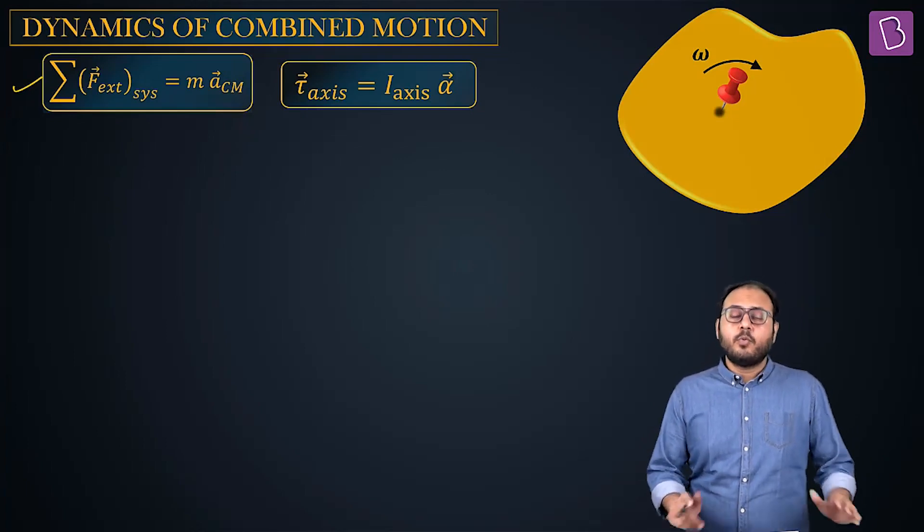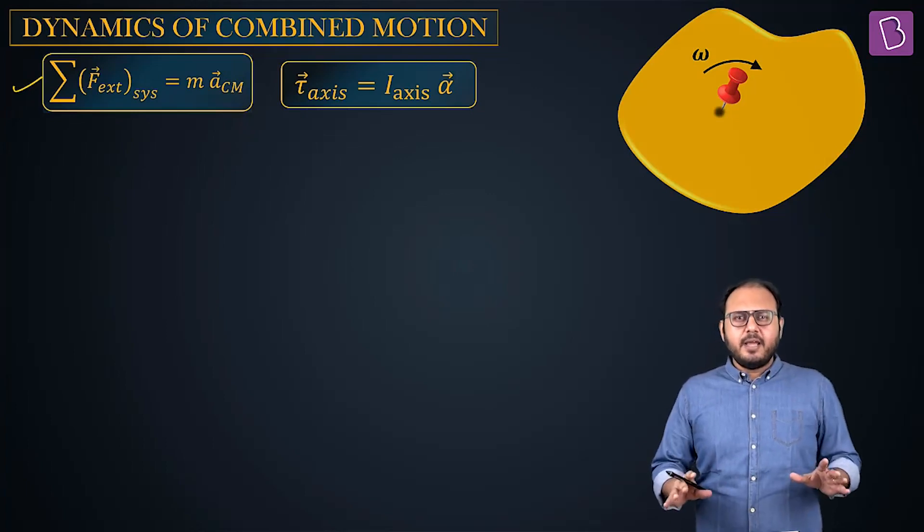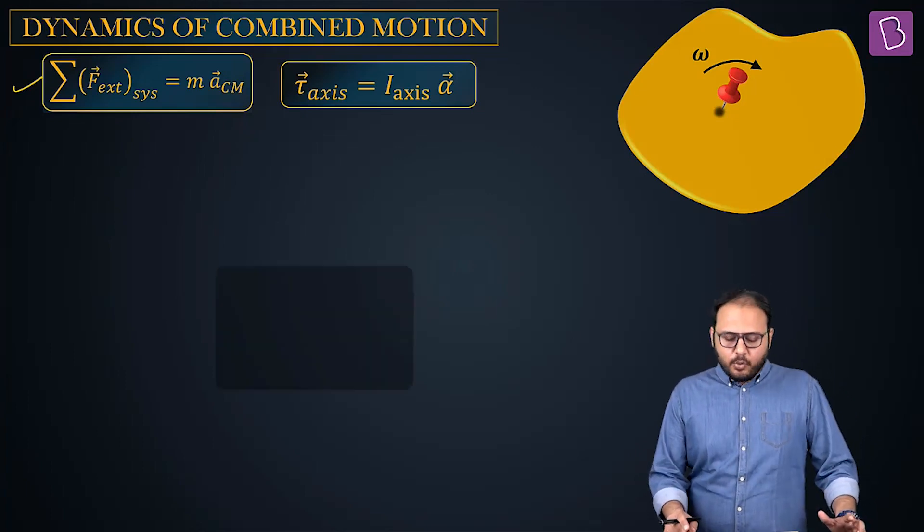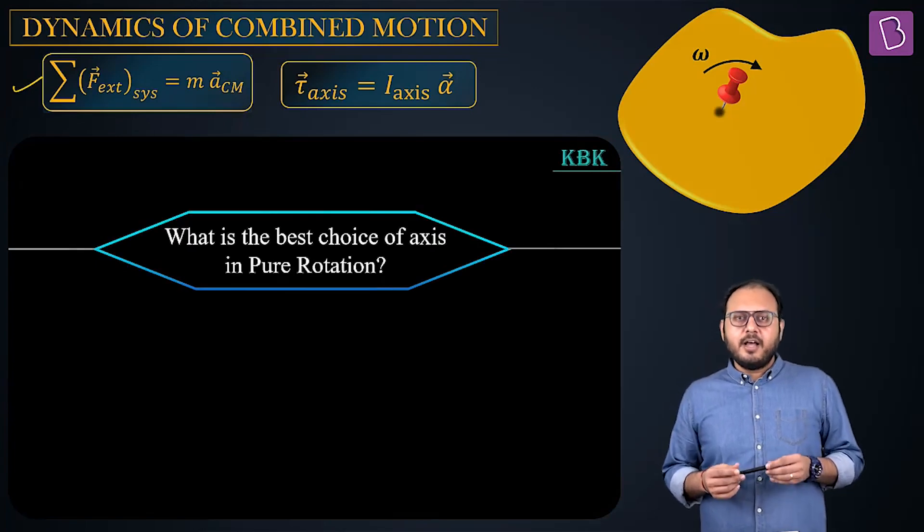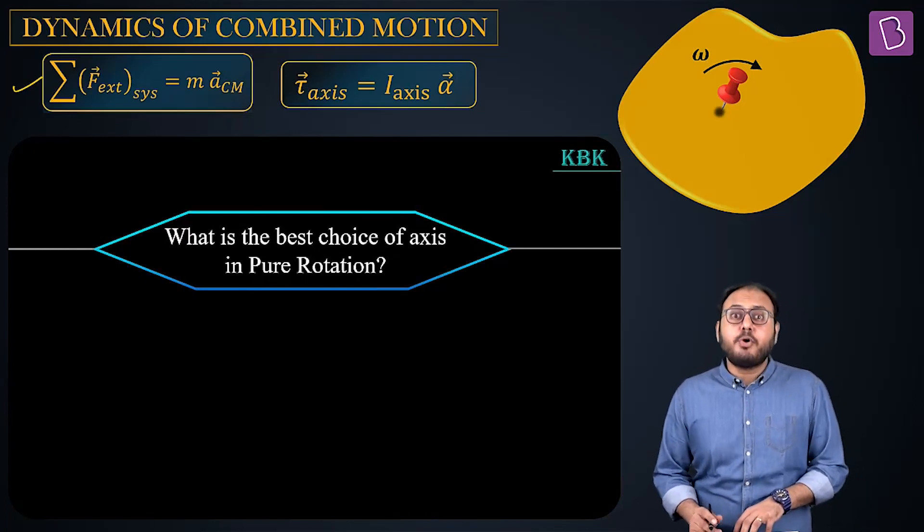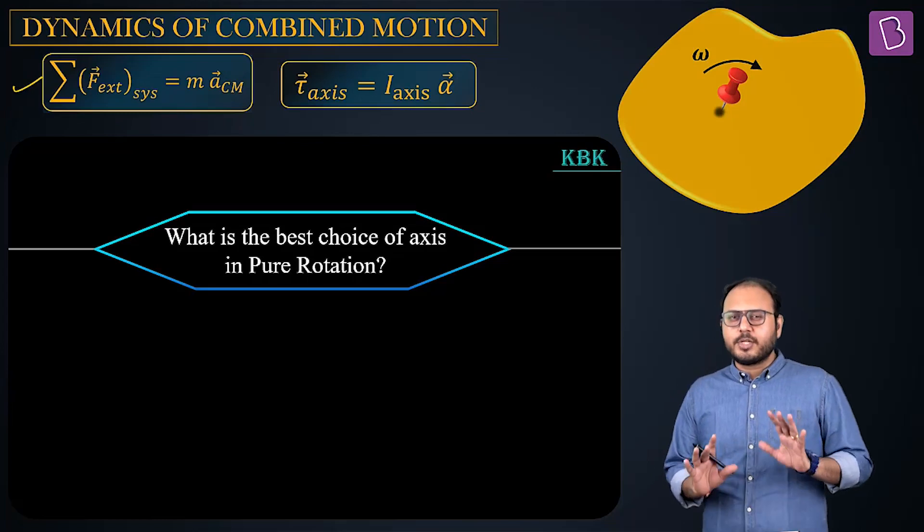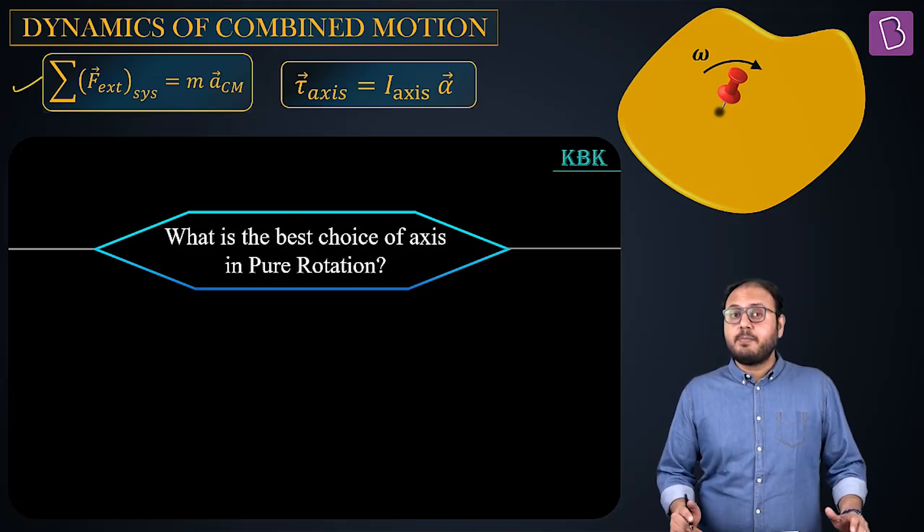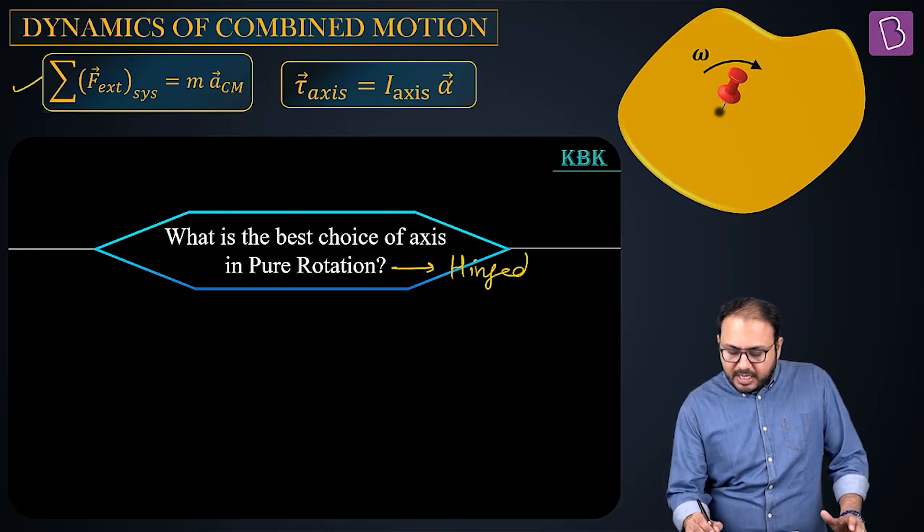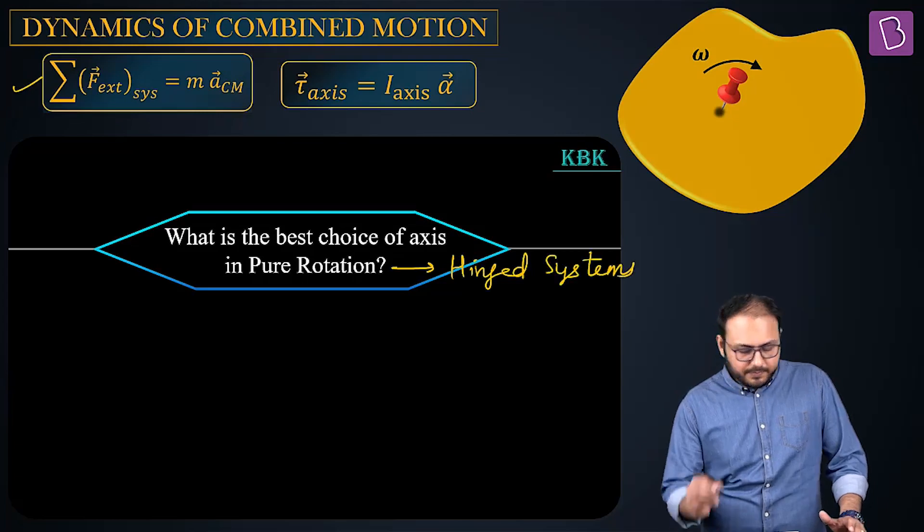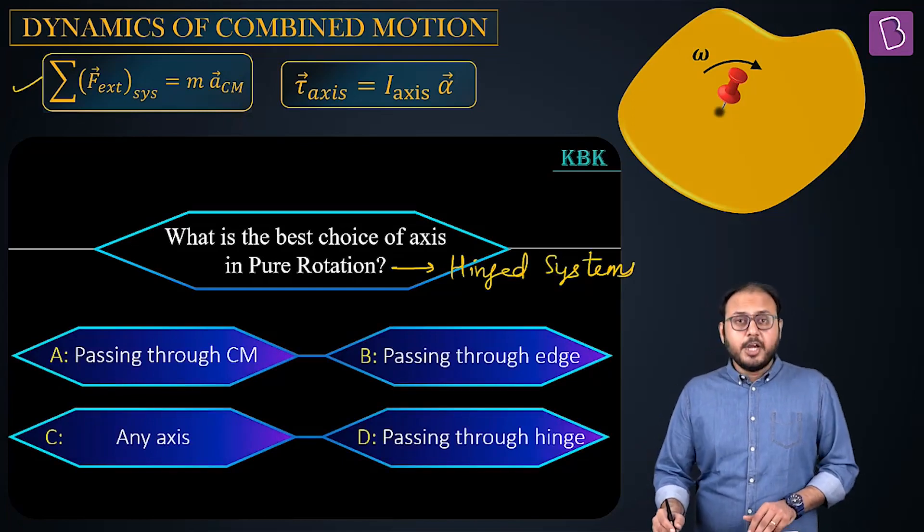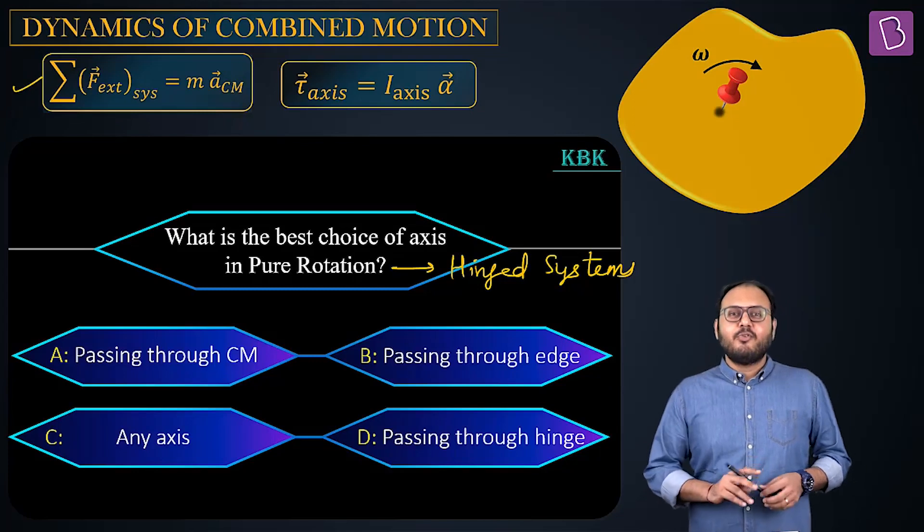Anyone? Any guesses? While we are taking guesses, why don't we play an official guessing game? What's the agenda? Agenda is to acquire knowledge. Knowledge about what? About who is the axis? So let's play: Who will be knowledgeable? What is the best choice of axis in pure rotation? This is a warm-up question for you. What is the best choice of axis in pure rotation? What is pure rotation, you ask? Pure rotation is the hinged system's rotation. You have four options: passing through CM, passing through edge, any axis, and passing through the hinge.